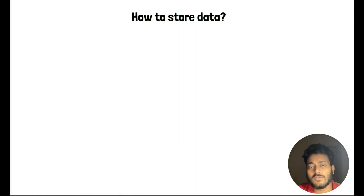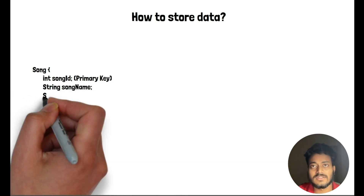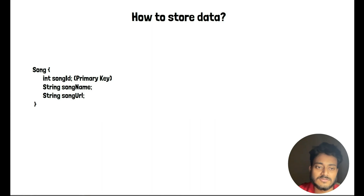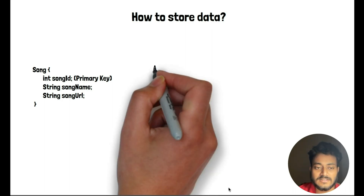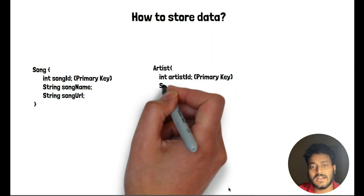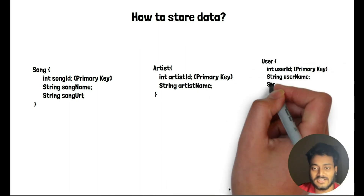Now let's look at how we are going to store the data and see how the structure of data will look like. We'll have a table — an entity named Song — which will have a song ID, a song name, and a song URL where the original MP3 file will be stored. Another entity here can be Artist, with artist ID as the primary key and artist name.